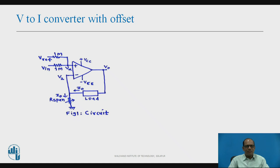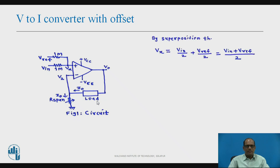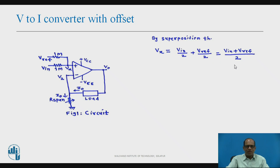Now we proceed further for the derivation of the load current I0. For the given circuit, voltage at the non-inverting terminal φ_x can be obtained by application of the superposition theorem. So by superposition theorem, voltage at point x: φ_x = φ_in × (1MΩ / (1MΩ + 1MΩ)) + φ_reference × (1MΩ / (1MΩ + 1MΩ)), which gives φ_x = (φ_in + φ_reference) / 2.